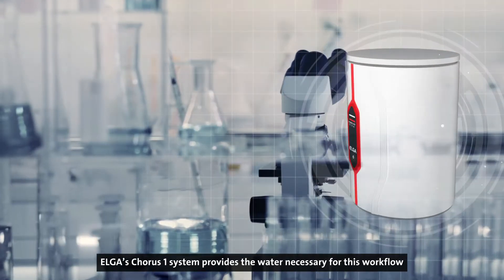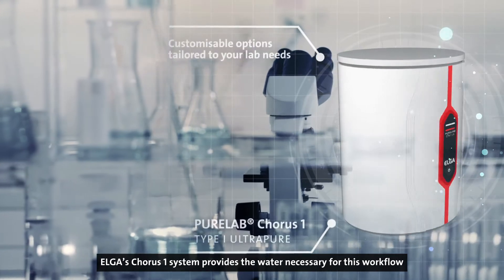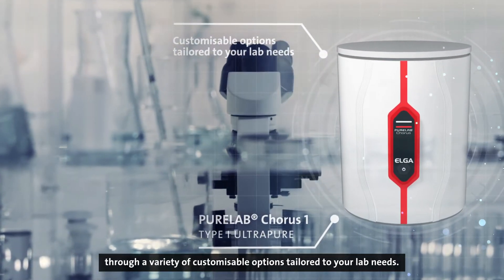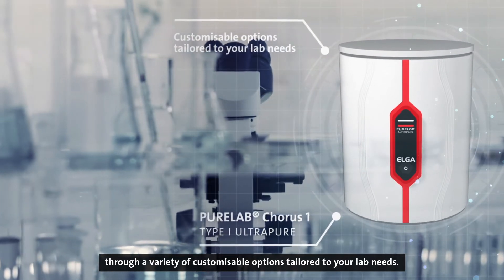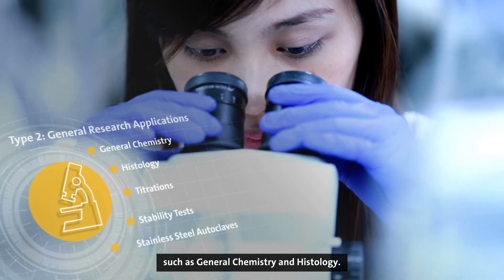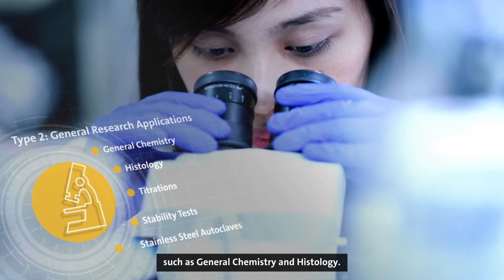Elga's Chorus 1 system provides the water necessary for this workflow through a variety of customizable options tailored to your lab needs. Type 2 water is needed for your more general research applications such as general chemistry and histology.